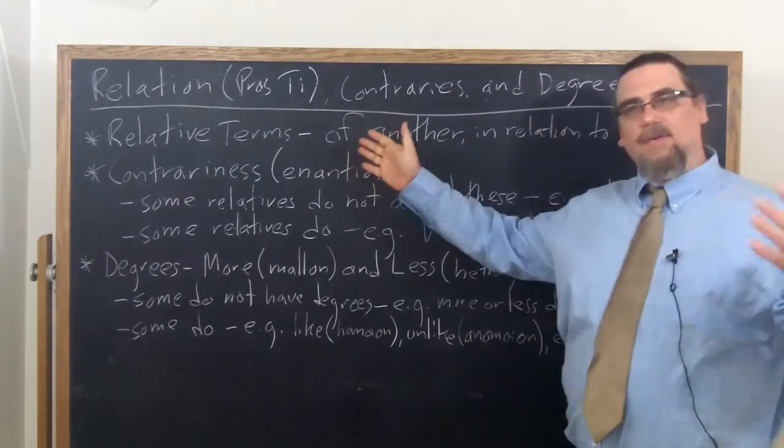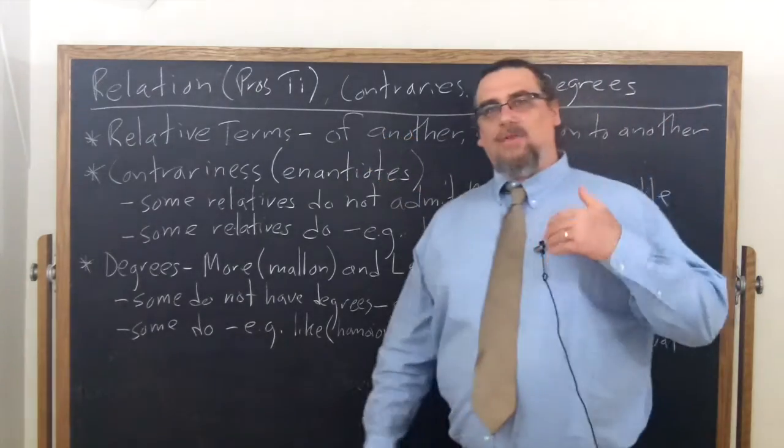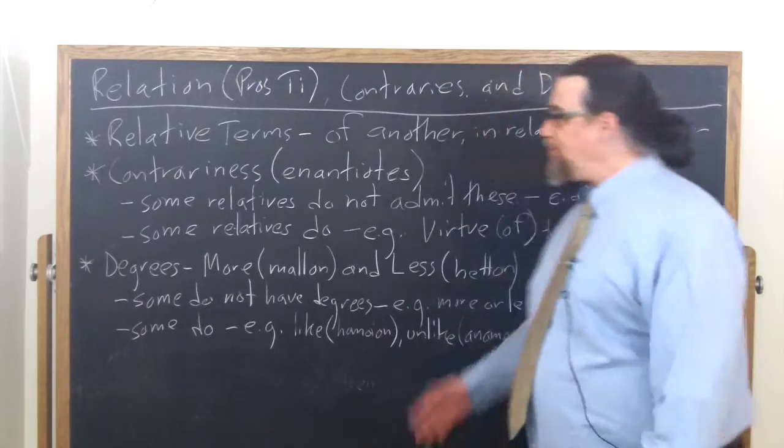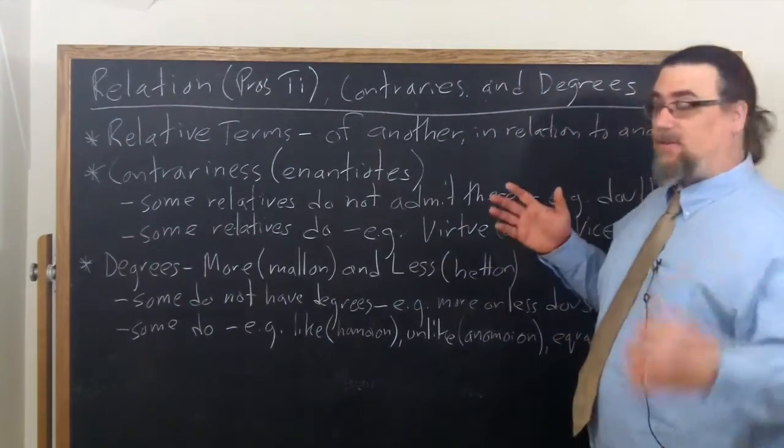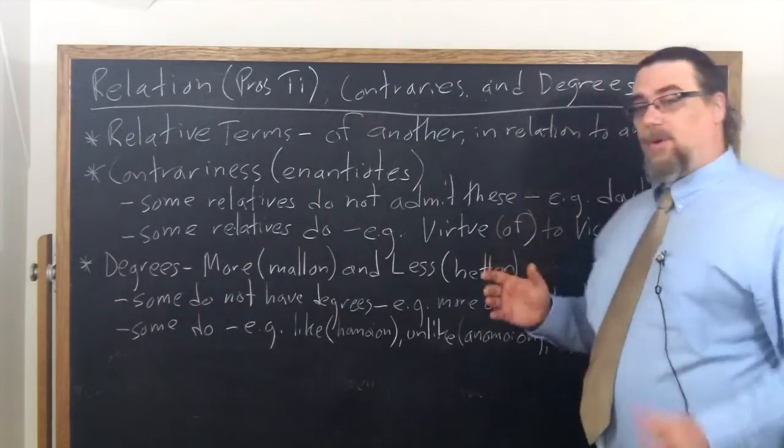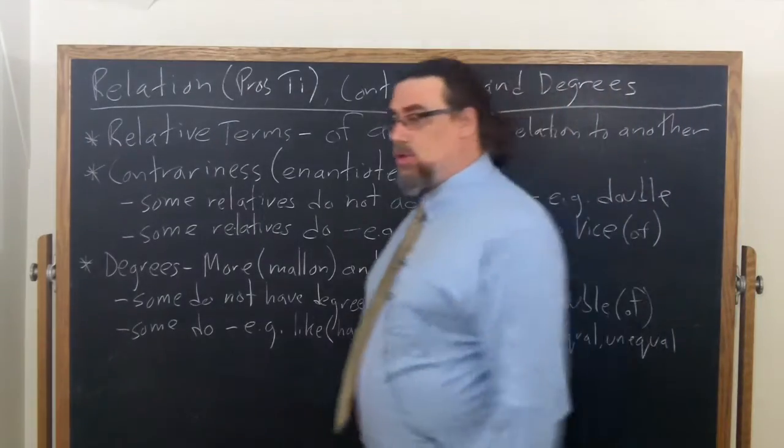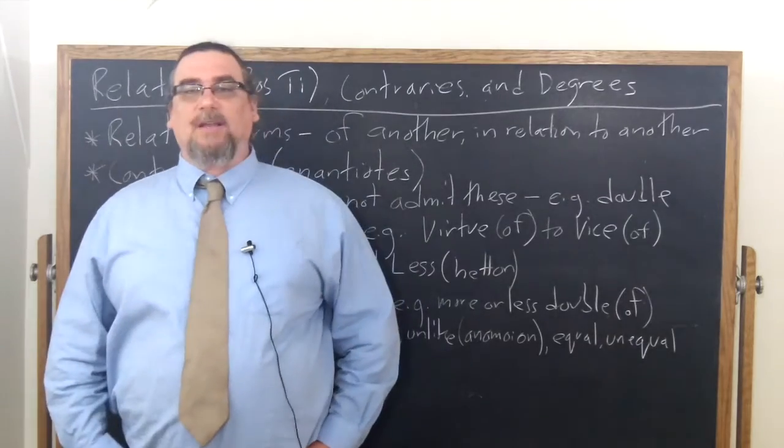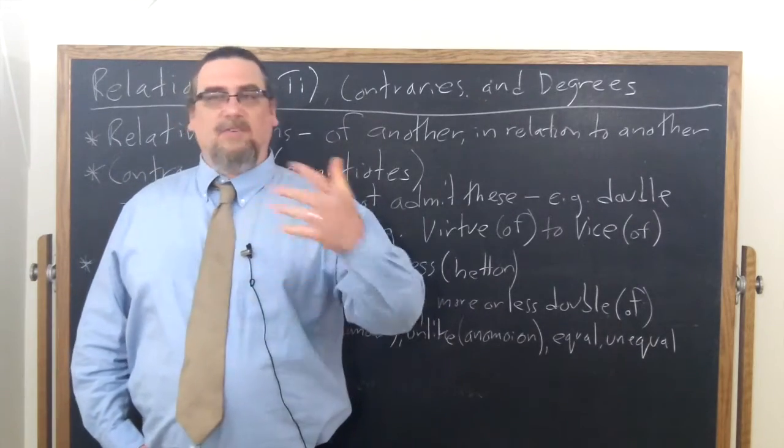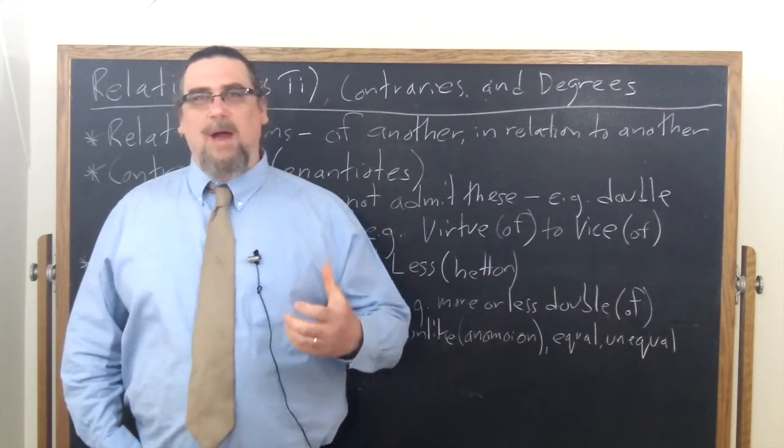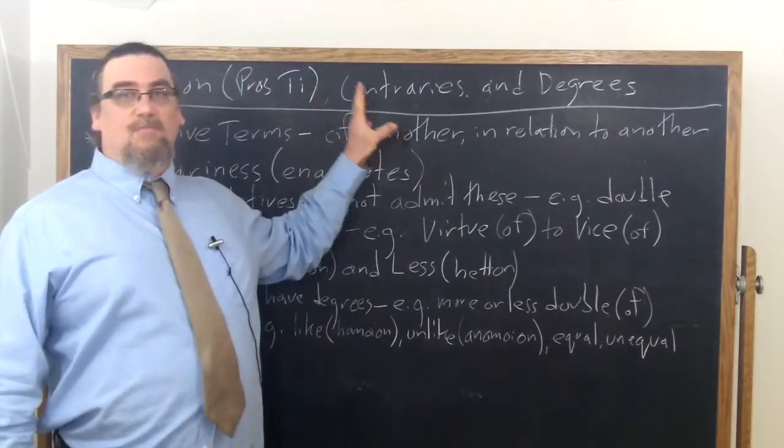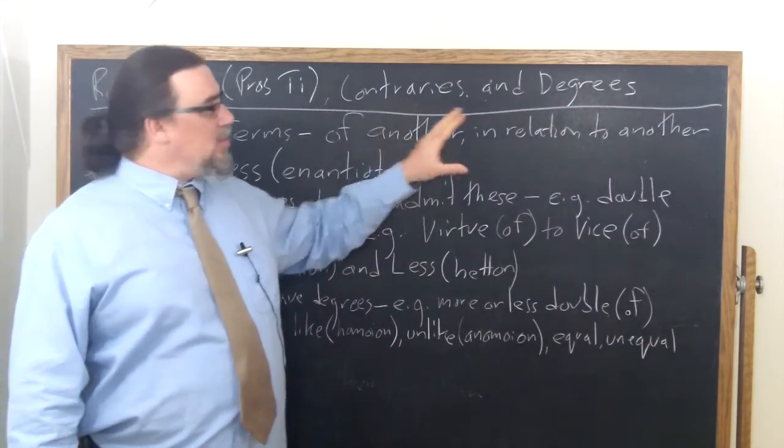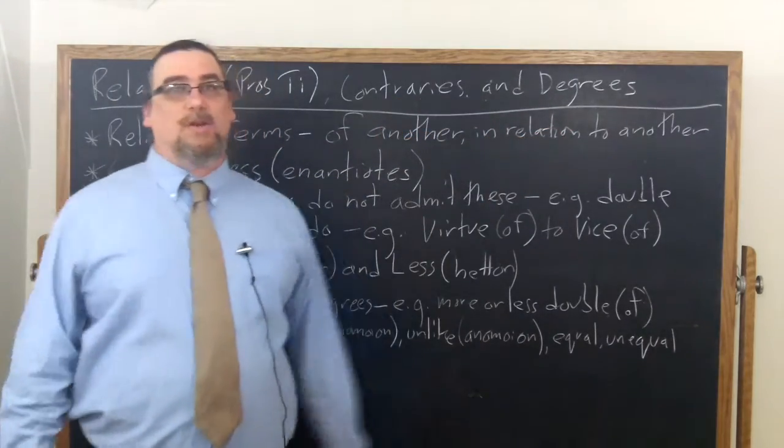So they are either of another, like for example, the son is the son of the father or the mother. Likewise, the mother is the mother of the son, or they're understood in relation to something else. And oftentimes these can be lexically synonymous. We can turn them around so that we have this essentially origin relation or belonging relation, or we can just talk about relation itself.